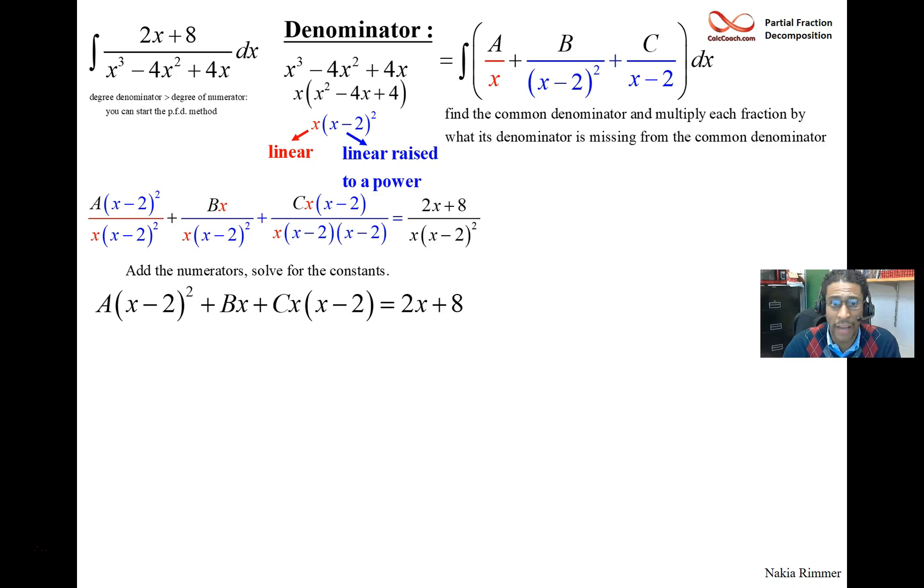And so a smart value or smart choice of x would be x equal to 2 because every term that has x minus 2 would go to 0. Another smart choice would be x equals 0 because every term that has an x in it will go to 0. And so instead of solving three equations and three unknowns, what we can do is pick this smartly and be able to solve for one equation and one unknown.